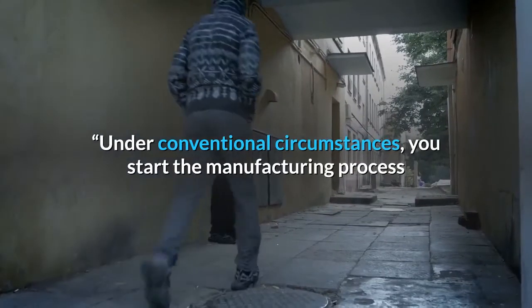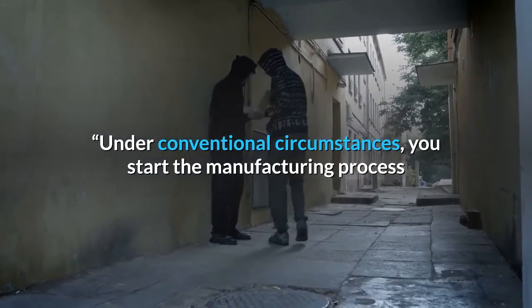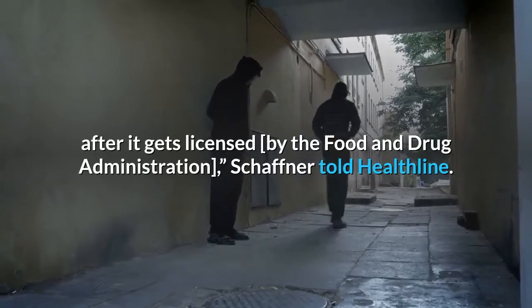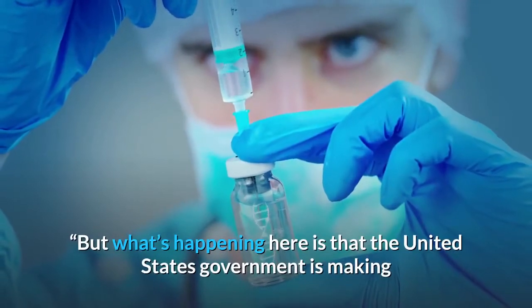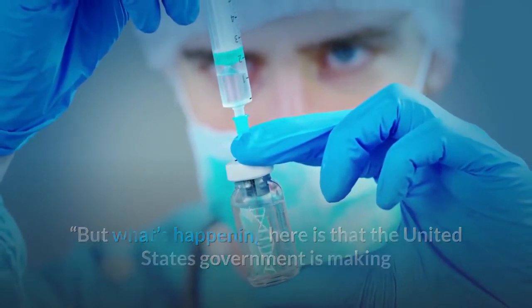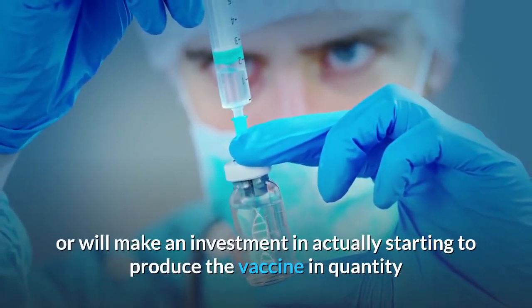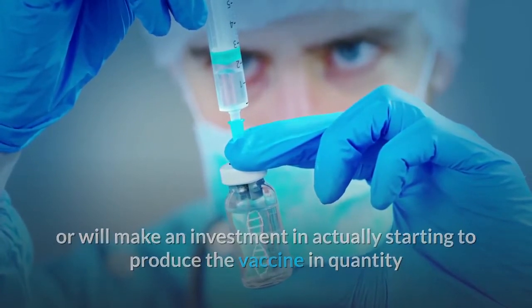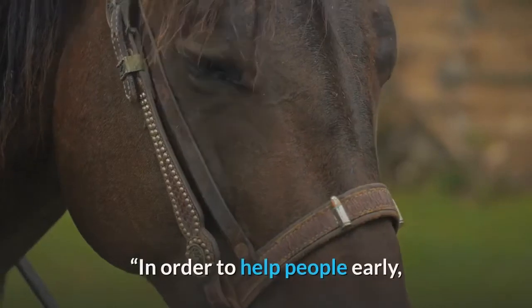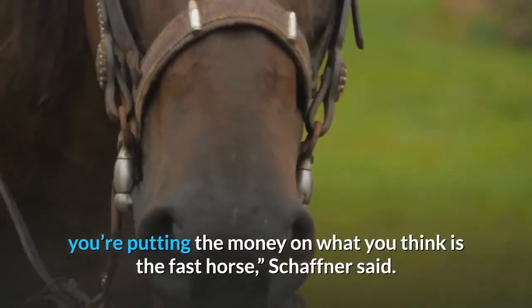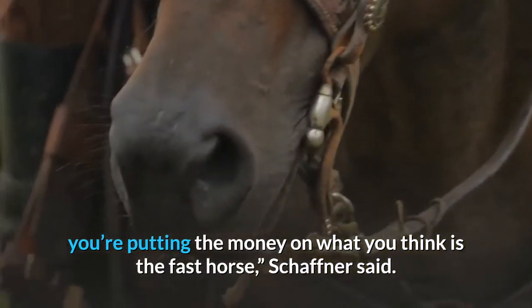Under conventional circumstances, you start the manufacturing process after it gets licensed by the Food and Drug Administration, Schaffner told Healthline. But what's happening here is that the United States government is making or will make an investment in actually starting to produce the vaccine in quantity before the final effectiveness trial is finished. In order to help people early, you're putting the money on what you think is the fast horse, Schaffner said.